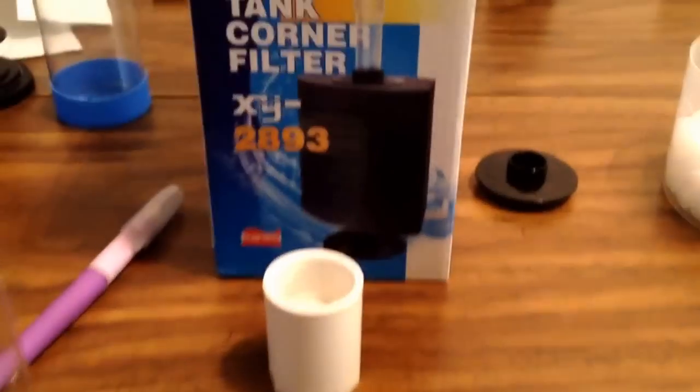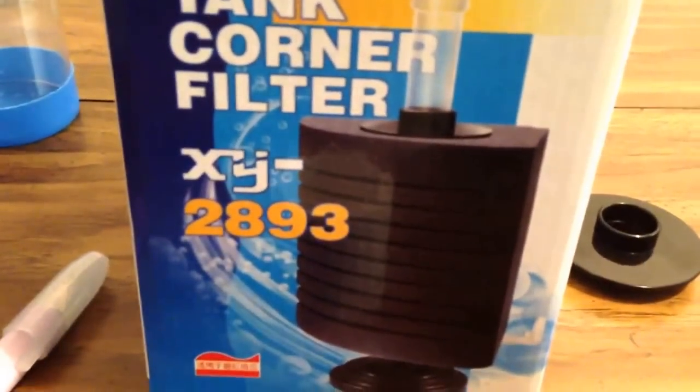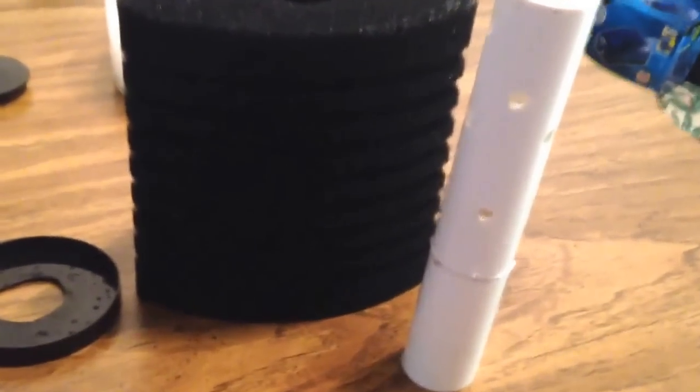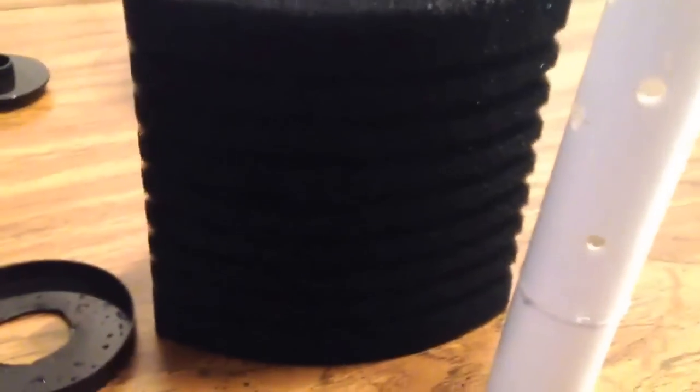I'm going to now make this the quickest do-it-yourself video on the planet. First you're going to start off with the sponge filter, 2893. It's a tank corner filter. Very large. It's almost about 6 inches. I'd say about 5 inches. Big, so it's really big.